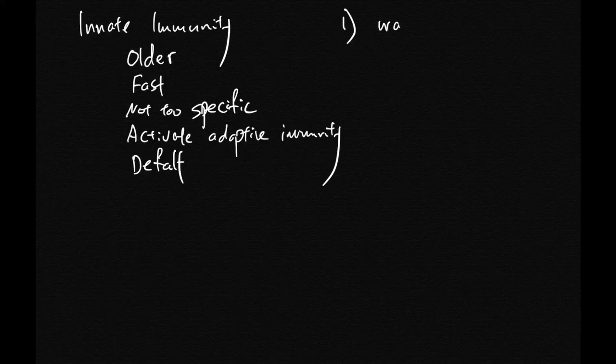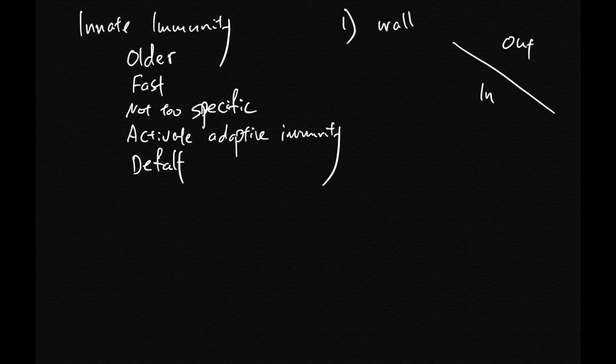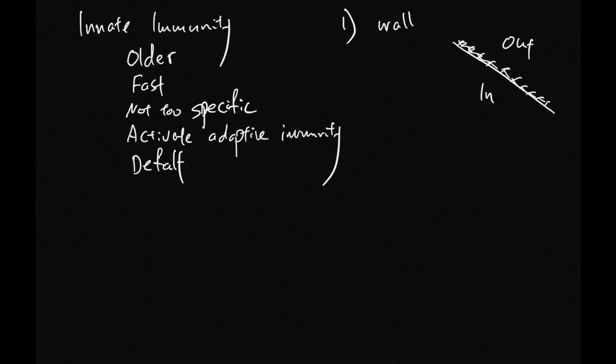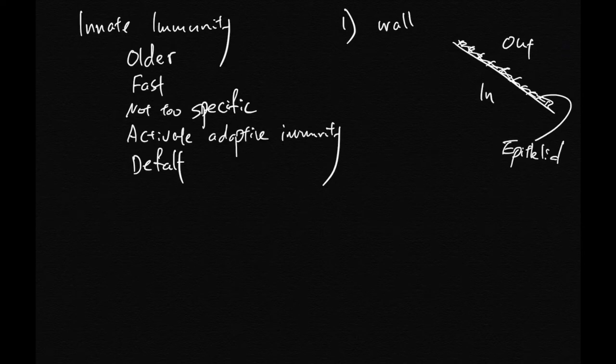First component: wall. Anything between the outside world and inside of your own body, that's innate immunity. Usually this outermost layer is made with epithelial cells, and once in a while you also find special cells like goblet cells.